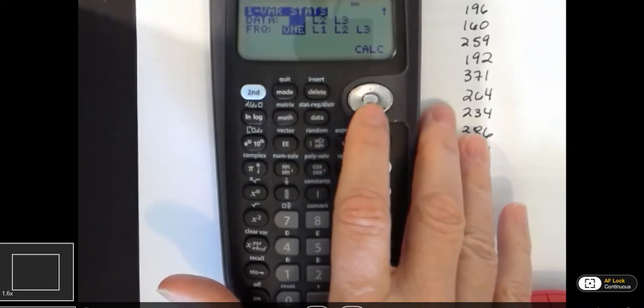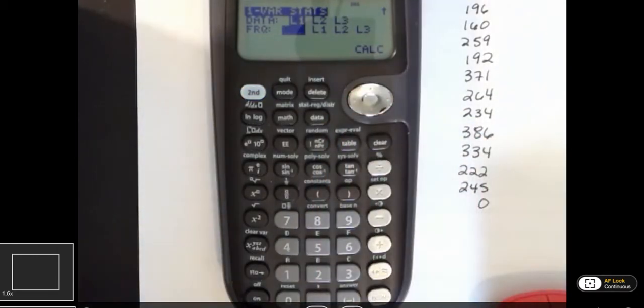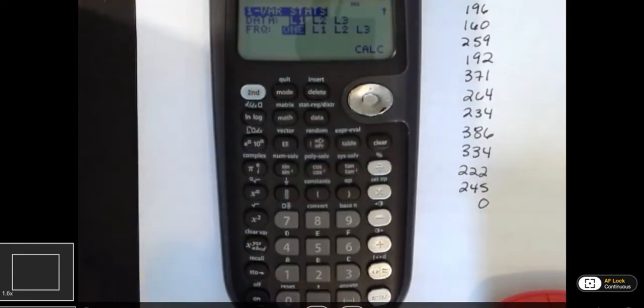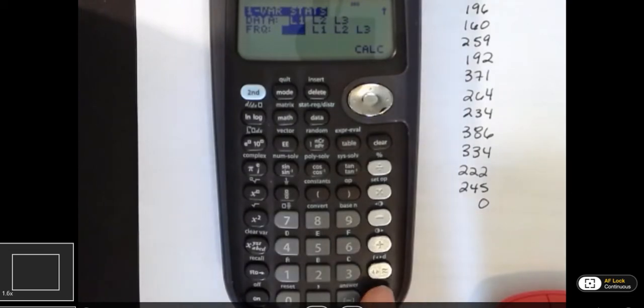So I'm going to hit the down button or the enter to get down to the next line. And that says frequency. And the frequency is one. That's automatic. If I had different frequencies, I would use a different column. But one is good for me. And I'm going to hit enter again. And then I'm going to say calculate.